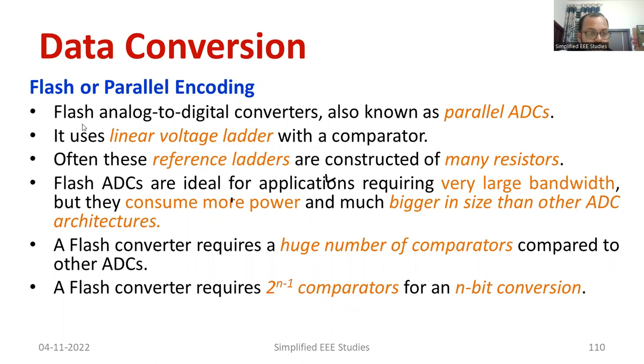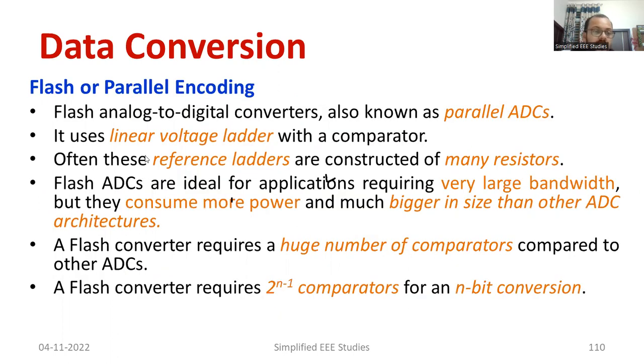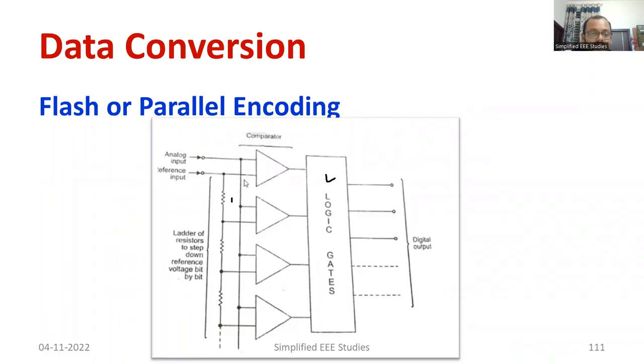We know that flash analog-to-digital converter is also known as parallel encoding. See, op-amps are connected in parallel and there is a series divider, voltage divider. It uses linear voltage ladder with a comparator. Where is the linear voltage ladder? See, this is your linear voltage ladder. You can see linear voltage ladder with a comparator. That is what exactly I just wanted to convince you.